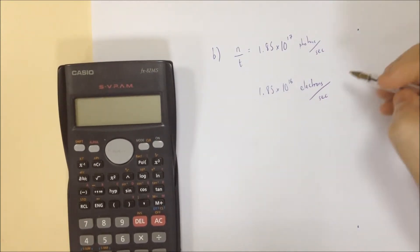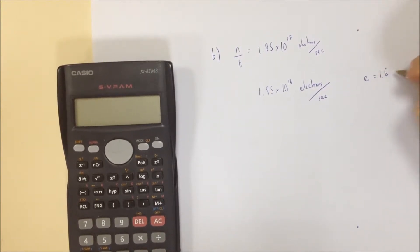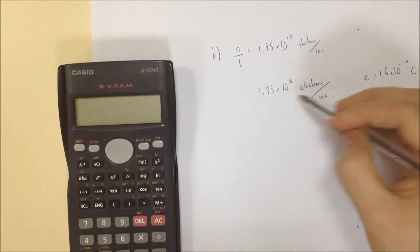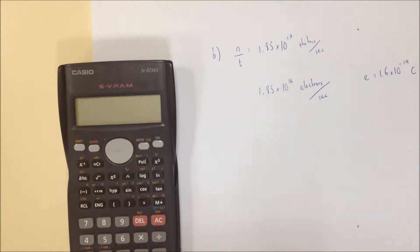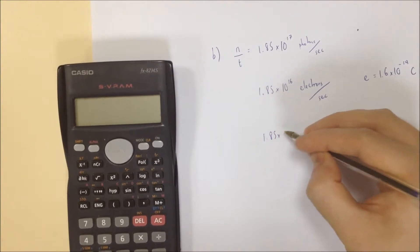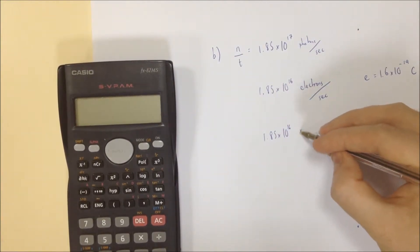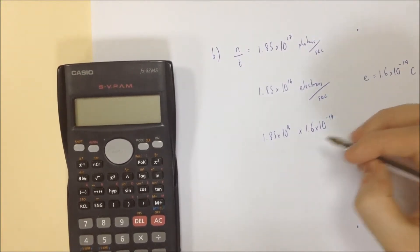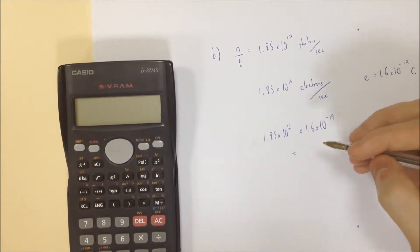Now the charge on one electron is 1.6, it's actually technically a minus, but we'll ignore that. 1.6 times 10 to the minus 19 coulombs. That's the charge on one electron. So if you have this many electrons and you want to know the total charge, you're going to multiply these through. So 1.85 times 10 to the 16 multiplied by 1.6 times 10 to the minus 19